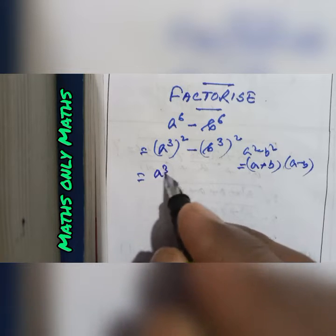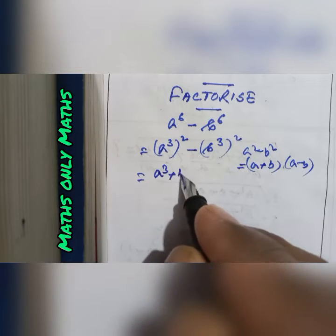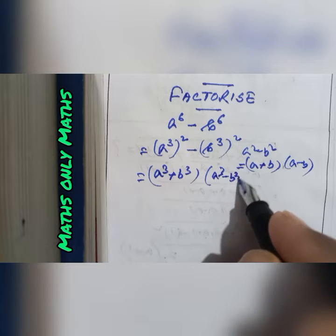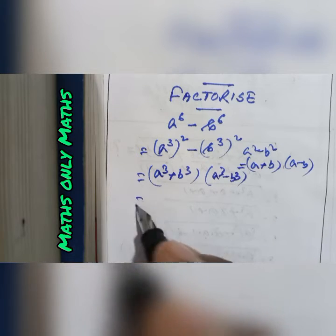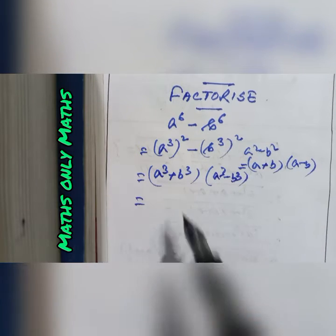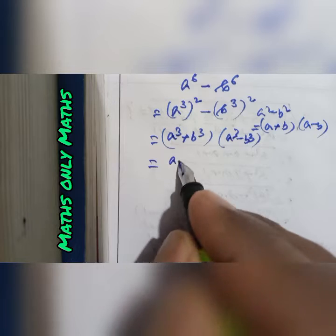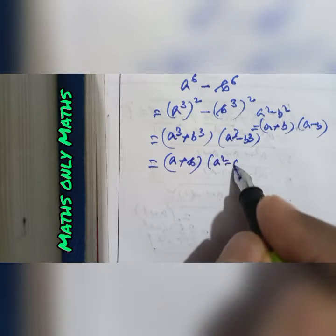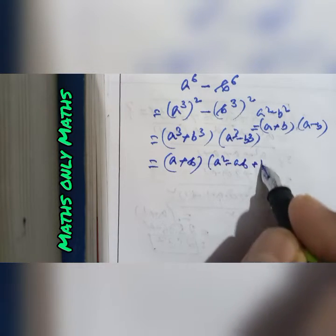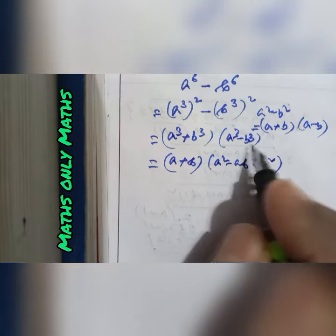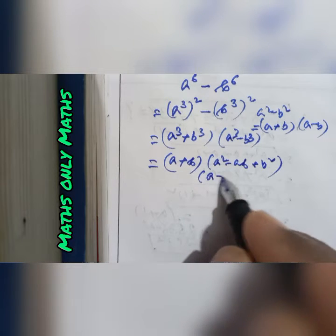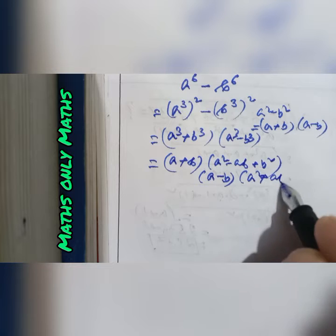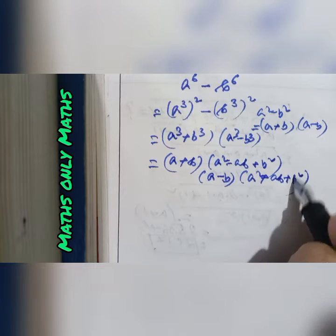So a³ + b³ multiplied by a³ − b³. The formula for a cube plus b cube is (a + b)(a² − ab + b²), and the formula for a cube minus b cube is (a − b)(a² + ab + b²). Applying both gives the complete factorization of a⁶ − b⁶.